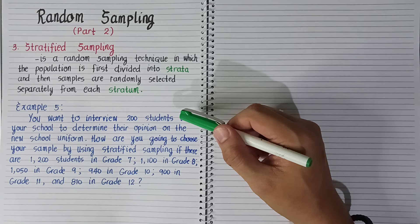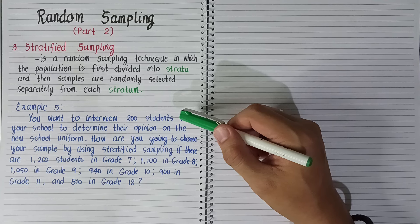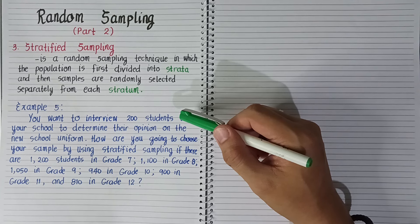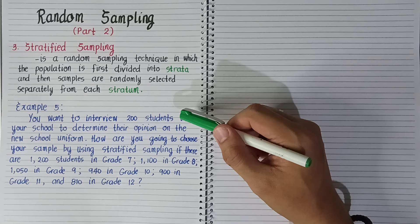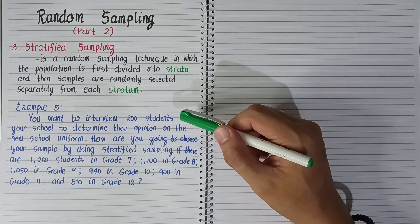The sample we take from each group depends on population size. If one group has the largest population, more samples should come from there. If a group has a smaller population, we should take fewer samples from that group.